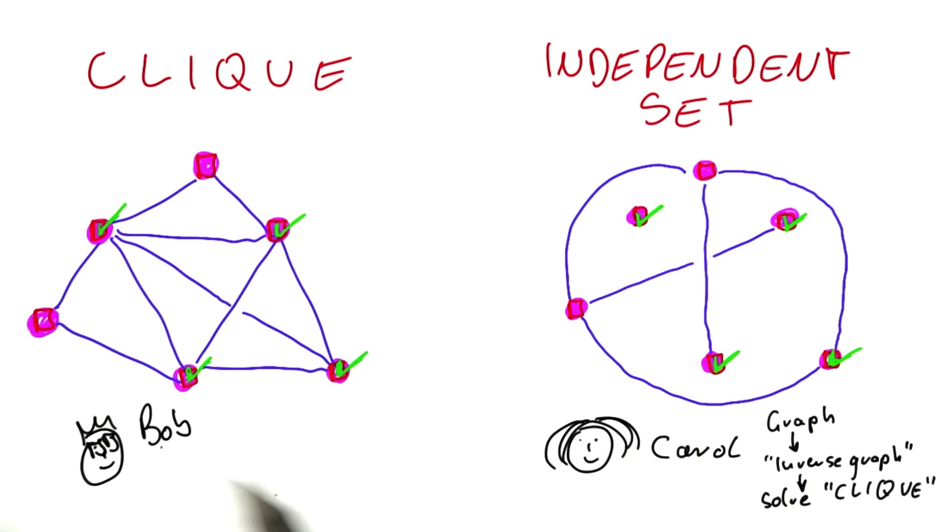And it's the same for Bob here. Because if Carol finds a good algorithm for independent set, what he can do is he can take his graph, also build the inverse graph, and then solve independent set.